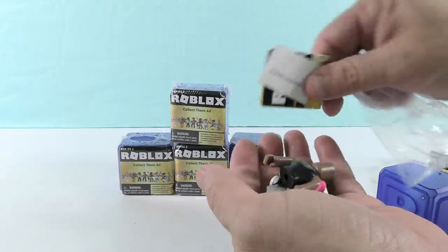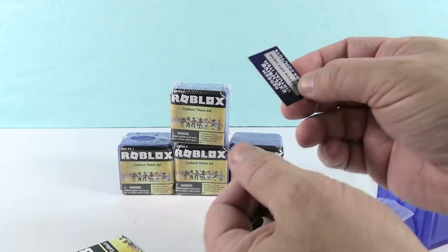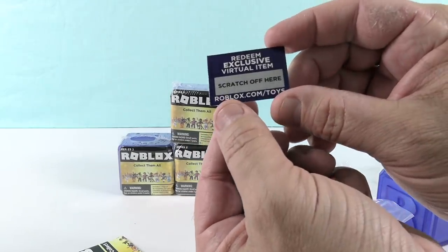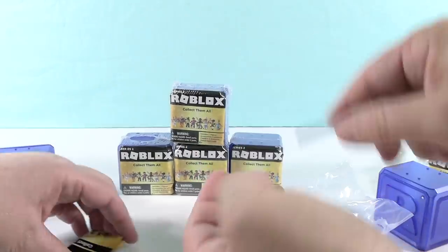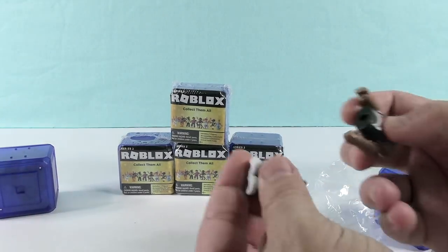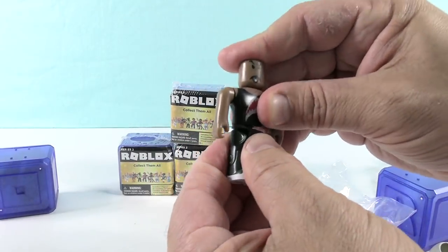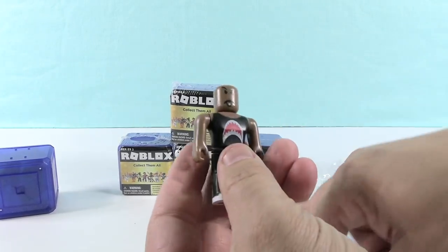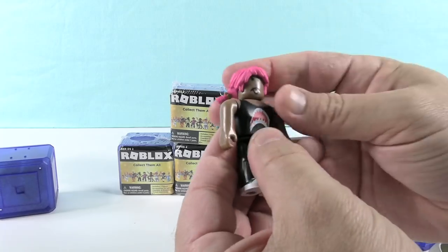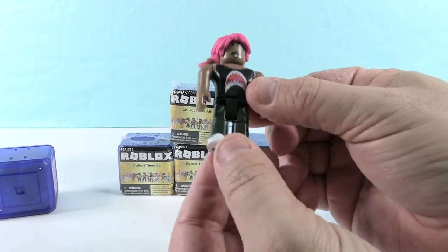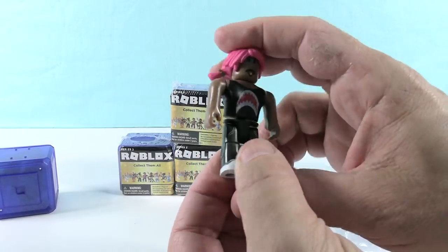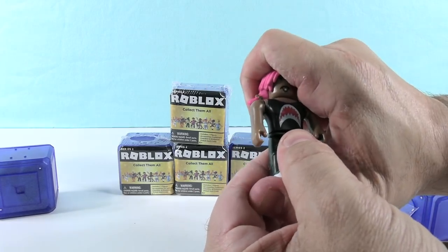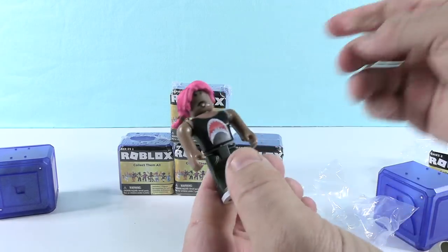Let me give Shannon the checklist here. So each Roblox figure does come with an exclusive virtual item you scratch off there, and you get an item virtually. Oh yeah, I forgot we have to build these. You have somebody with a shark shirt. Somebody with a shark shirt and pink hair. I love it. I love the bright pink hair and I do like the shark shirt. That is Vehicle Simulator Drag Racer. Cool.